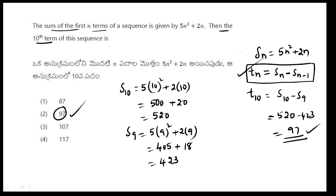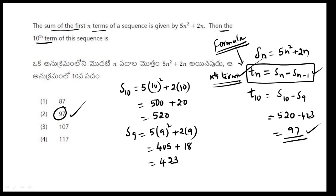This is an easy method. If you remember this formula, you can solve the problem easily. The formula is: when sum of n terms is given and you need the nth term, use nth term = S(n) minus S(n-1). This is the shortcut trick for finding the nth term.